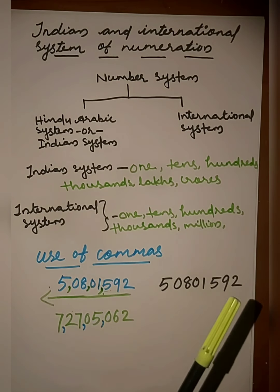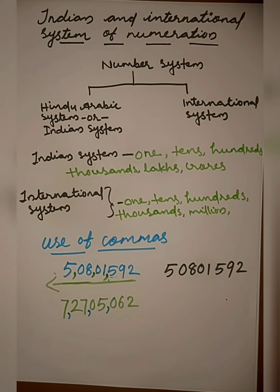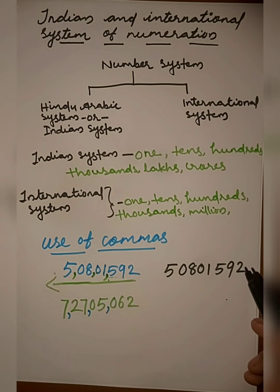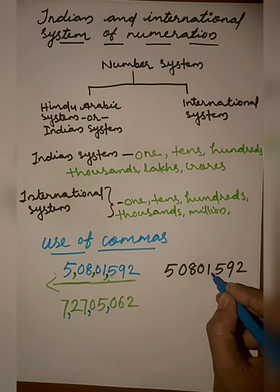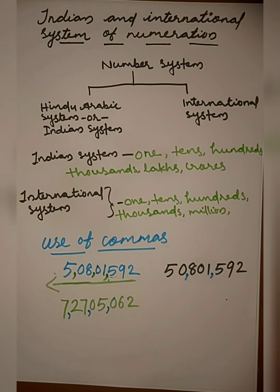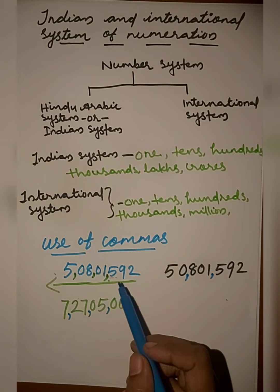Now we discuss the use of commas in the International number system. For the same number, we place commas after every three digits from the right. The first comma goes after three digits, the second comma after another three digits, and the third comma after yet another three digits.